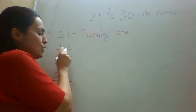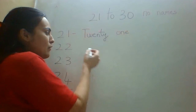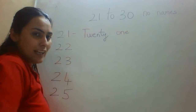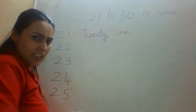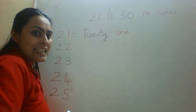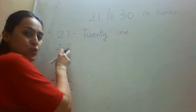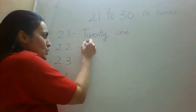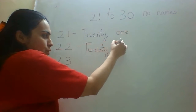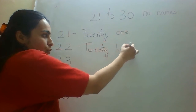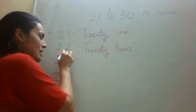Again, what is 22? The spelling of 20 is already written. So you have to write 20 and then here you have to write 2. That is 22. So it is very simple — you just need to learn one spelling, that is 20: T-W-E-N-T-Y. Then we have 22: T-W-E-N-T-Y, and the spelling of 2, which we already know, is T-W-O.